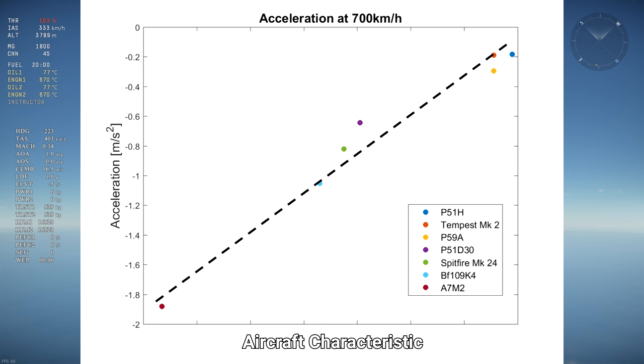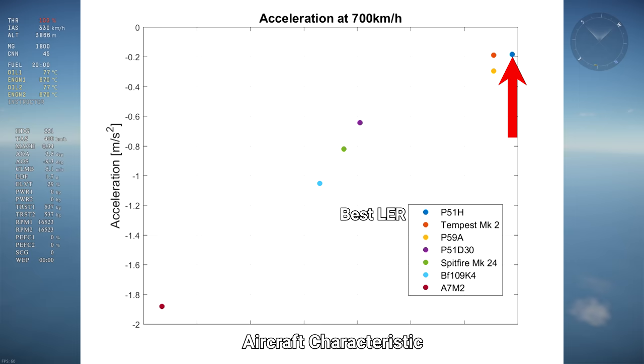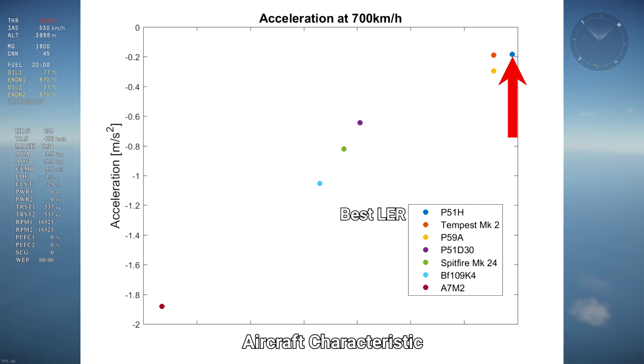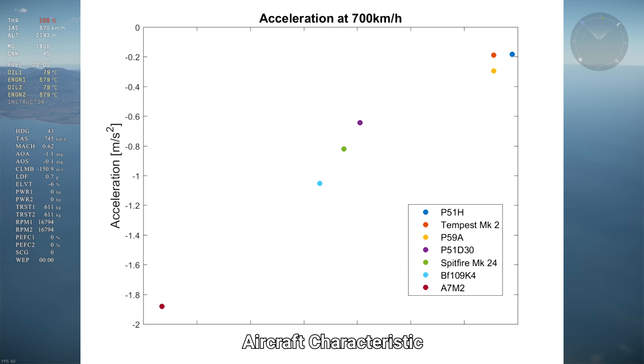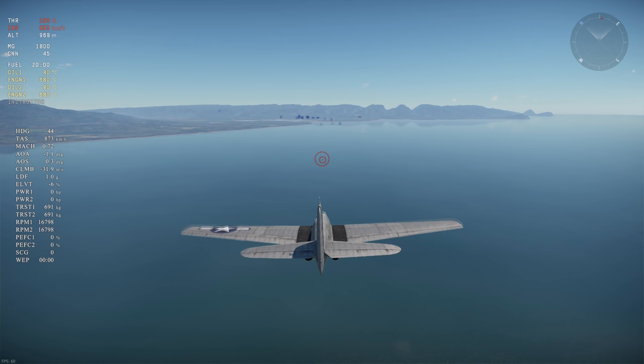The seven aircraft present in this graph and ordered from highest acceleration to lowest acceleration are the P-51H at minus 0.2 meters per second squared, Tempest Mark II, P-59, P-51D-30, Spitfire Mark 24, BF-09K-4, and A7M2 at minus 1.9 meters per second squared. I chose Tier 4 aircraft with relatively different designs and characteristics to get a nice comparison. The accelerations are calculated by using the aircraft coefficients in the flight model data files.